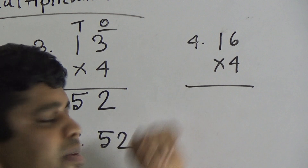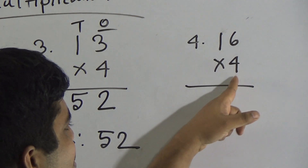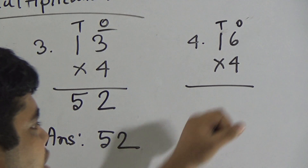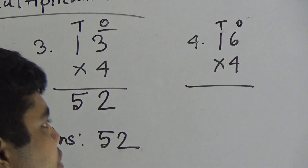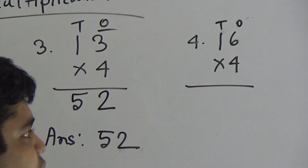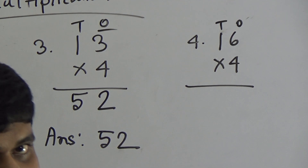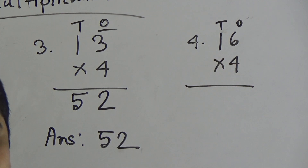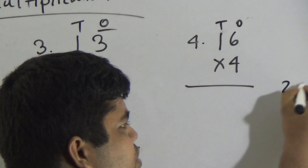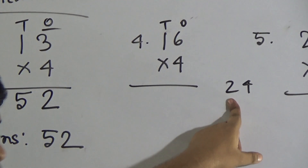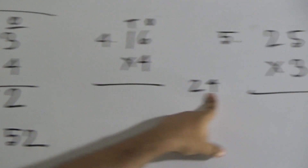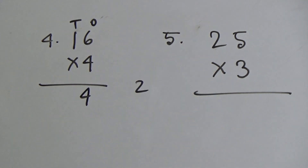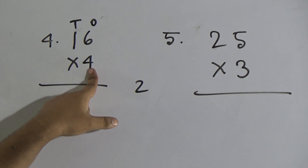Next question: 16 multiplied by 4. Here 6 is in the ones place and 1 is in the tens place. First we count times table 4 up to 6: 4 ones are 4, 4 twos are 8, 4 threes are 12, 4 fours are 16, 4 fives are 20, and 4 sixes are 24. From 24, we write 4 in the ones place and carry the 2.